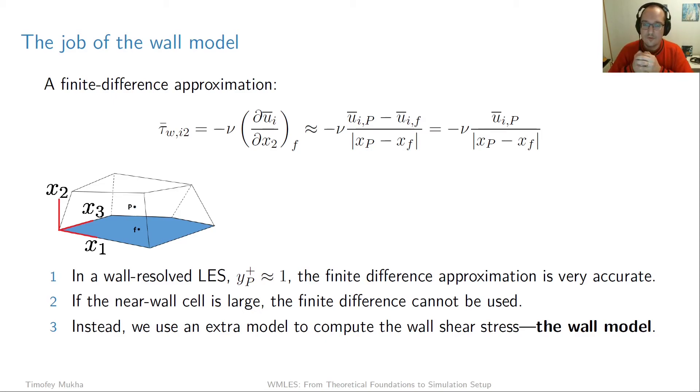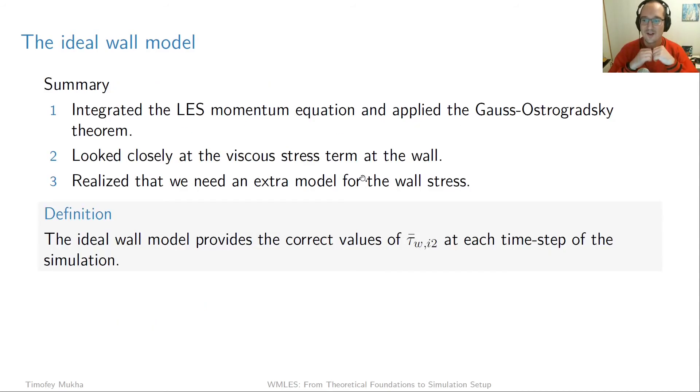And what we're going to do is introduce an extra model which, given some data from the LES, for example the velocity signal from some cell center near the wall, is going to compute the correct value of tau wall for us. And this model is the wall model, right? So this is the job of the wall model in wall stress modeling. That's the reason why it's called wall stress modeling. The job of the wall model is to produce the value of the wall stress.